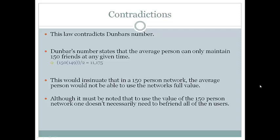Going back to Dunbar's number, this would mean you could not use the networks to the full value. Of course, it should be noted that every friend in that network need not connect to each other. But this leads to another flaw, which is assigning equal value to all connections.